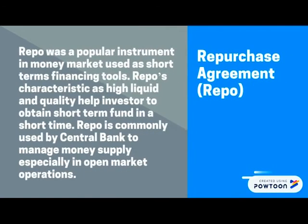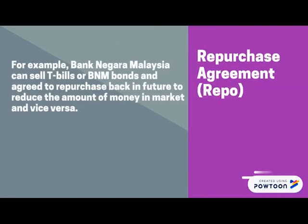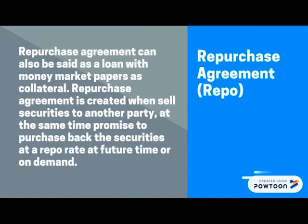Repo is a popular instrument in the money market used as a short-term financing tool. Its characteristics of high liquidity and quality help investors obtain short-term funds in a short time. Repo is commonly used by central banks to manage money supply, especially in open market operations. For example, Bank Negara Malaysia can sell T-bills or BNM bonds and agree to repurchase back in the future to reduce the amount of money in the market, and vice versa. Repurchase agreements could also be set as a loan with money market papers as collateral.